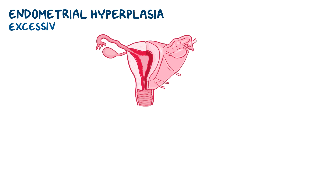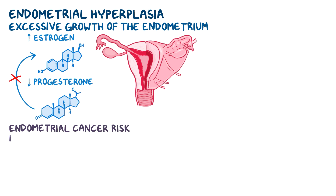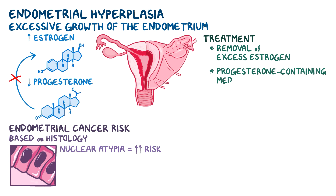As a quick recap, endometrial hyperplasia is the excessive growth of the endometrium. In most cases, it's caused by long-standing increased exposure to estrogen without the counteracting effect of progesterone. Endometrial hyperplasia carries a risk of progression into endometrial cancer depending on the histological findings, where complex hyperplasia with nuclear atypia has the highest risk of progression to cancer. Treatment involves the removal of the underlying cause of excess estrogen, progesterone-containing medications, and in some cases, hysterectomy.